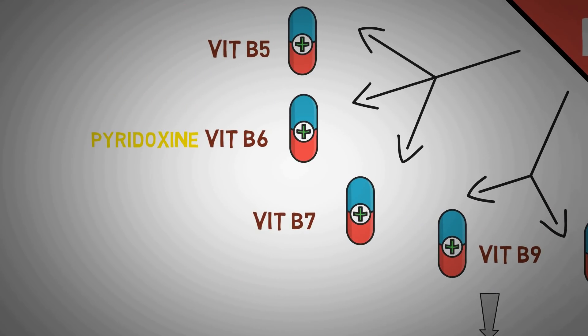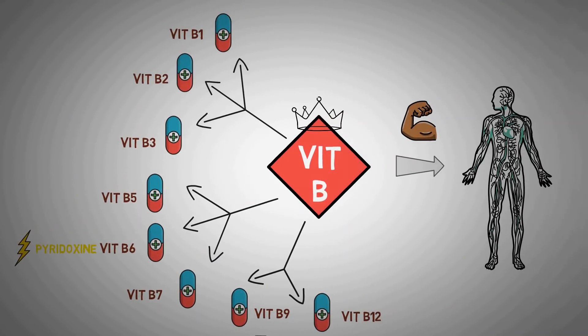Vitamin B6 or pyridoxin plays a critical role in energy levels and immunity. Vitamin B is key to the overall function of the body because it regulates the absorption of a lot of other components as well.